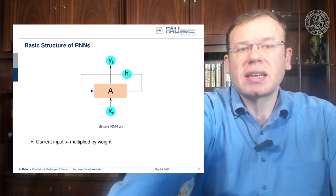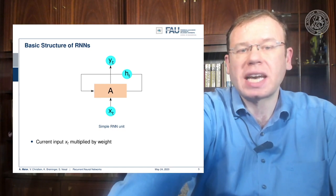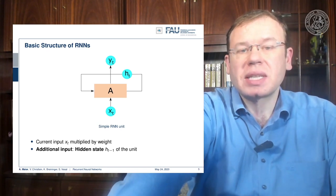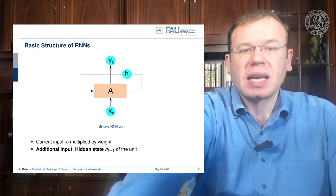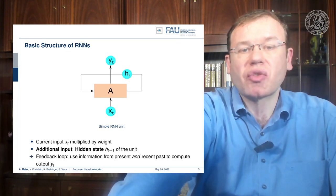Now, this is again our basic recurrent neural network where we have some input X that is multiplied with some weight. Then we have the additional input, the hidden state from the previous configuration. And then we have essentially a feedback loop where we use the information from the present and the recent past to compute the output YT.